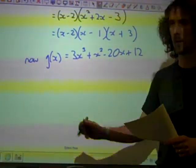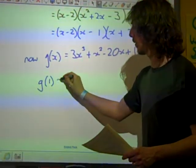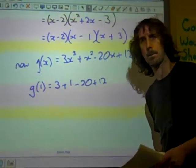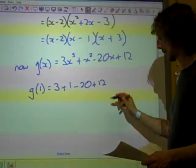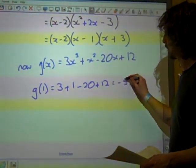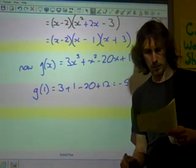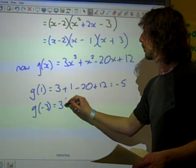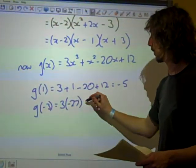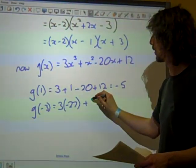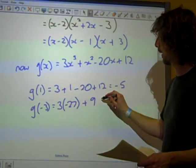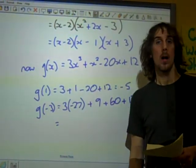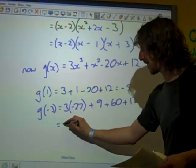g of 1 is 3 plus 1 minus 20 plus 12. That's minus 5, which isn't normally the same as 0. And if we try the other one, g of minus 3, we get, that would be minus 27, wouldn't it? Plus 9, plus 60, plus 12. This is looking better, isn't it? Because this is negative 81.